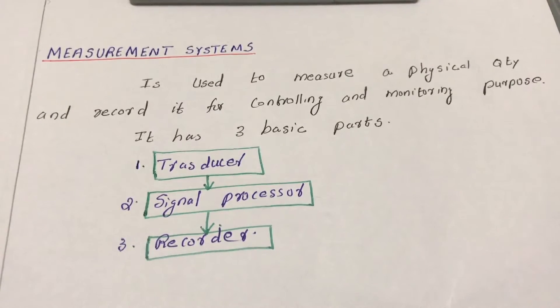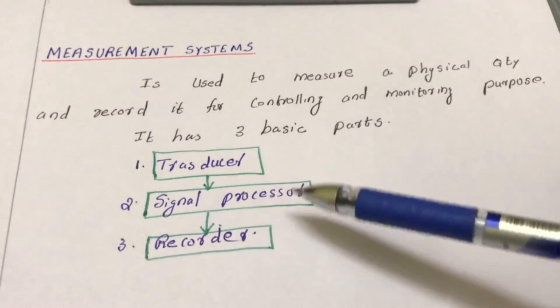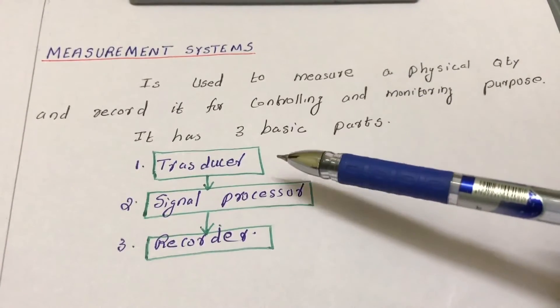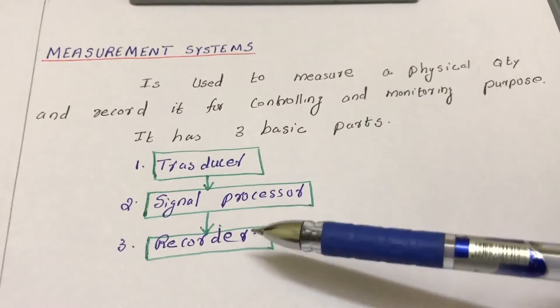For example, vibration. There are three basic parts for the measurement system: one is transducer, signal processor, and recorder.